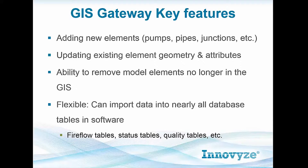Some of the key features in the GIS Gateway is that you can use it to add new elements — things like pumps, pipes, or junctions. You can use it to update existing elements, whether it be their geometry or their attributes. You also have the ability to remove model elements that are no longer in the GIS.